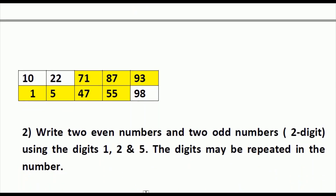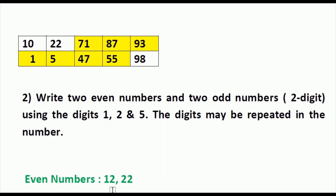Next question: write two even numbers and two odd numbers using two digits, using the digits 1, 2, and 5. The digits may be repeated in the number. So the given numbers are 1, 2, and 5. Using these three numbers we have to write two even numbers and two odd numbers. In the given numbers the only even number is 2, so for writing an even number the rule is the number should end with 2. The first even number we can write is 12, and the next even number — since we can repeat numbers — is 22.